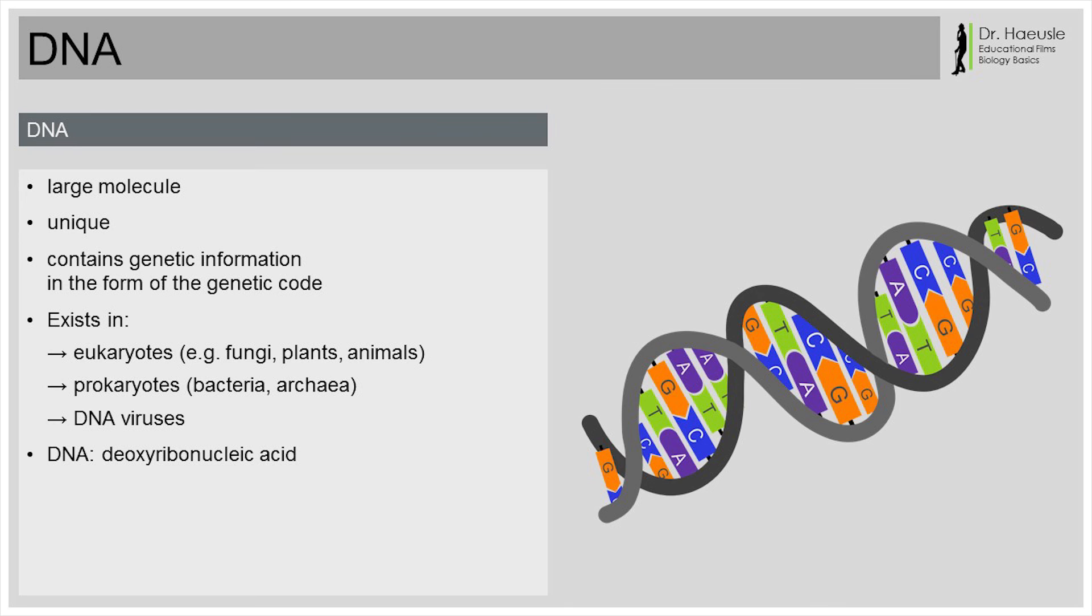All fungi, plants and animals, so humans as well, are examples of eukaryotes. Prokaryotes can either be bacteria or archaea. Archaea are similar to bacteria, but they have different ribosomes.